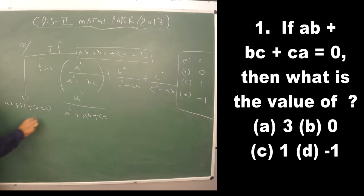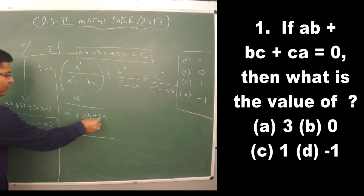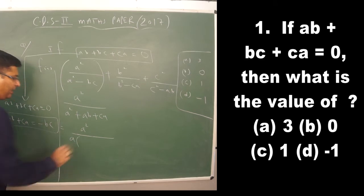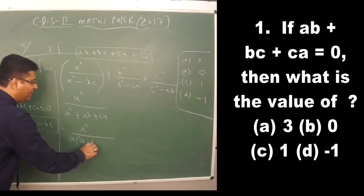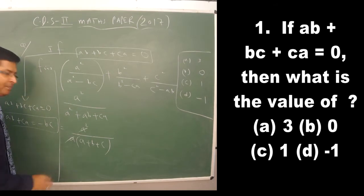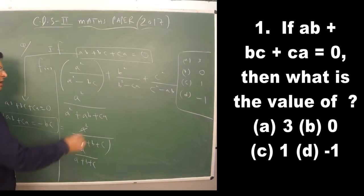From ab + bc + ca = 0, we get −bc = ab + ca. Substituting into the first denominator: a² − bc = a² + ab + ca. Taking a common from the denominator gives a(a + b + c), so the first term becomes a/(a+b+c).